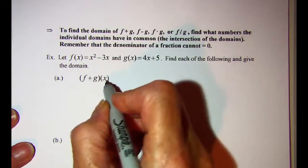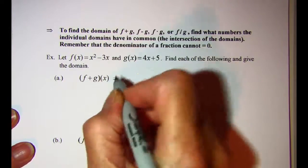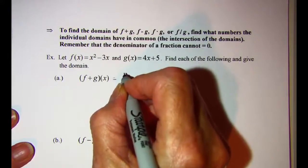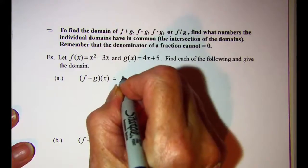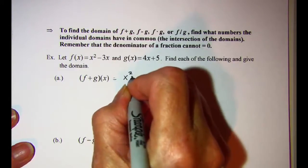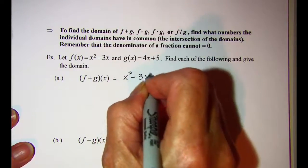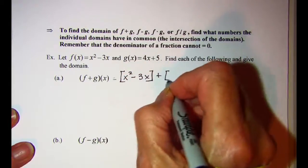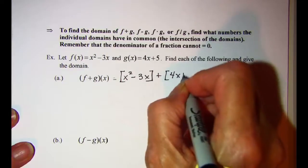So f plus g of x is f of x plus g of x. So x squared minus 3x added to 4x plus 5.